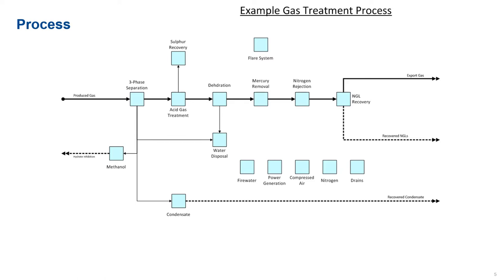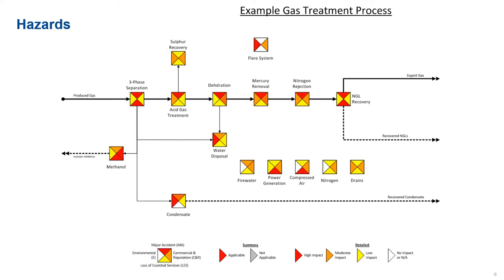If we superimpose on that our potential hazards, they could be major accident hazards, loss of essential services, potential for environmental damage or commercial reputational damage. You can see at a really high level whether that hazard is applicable or not.